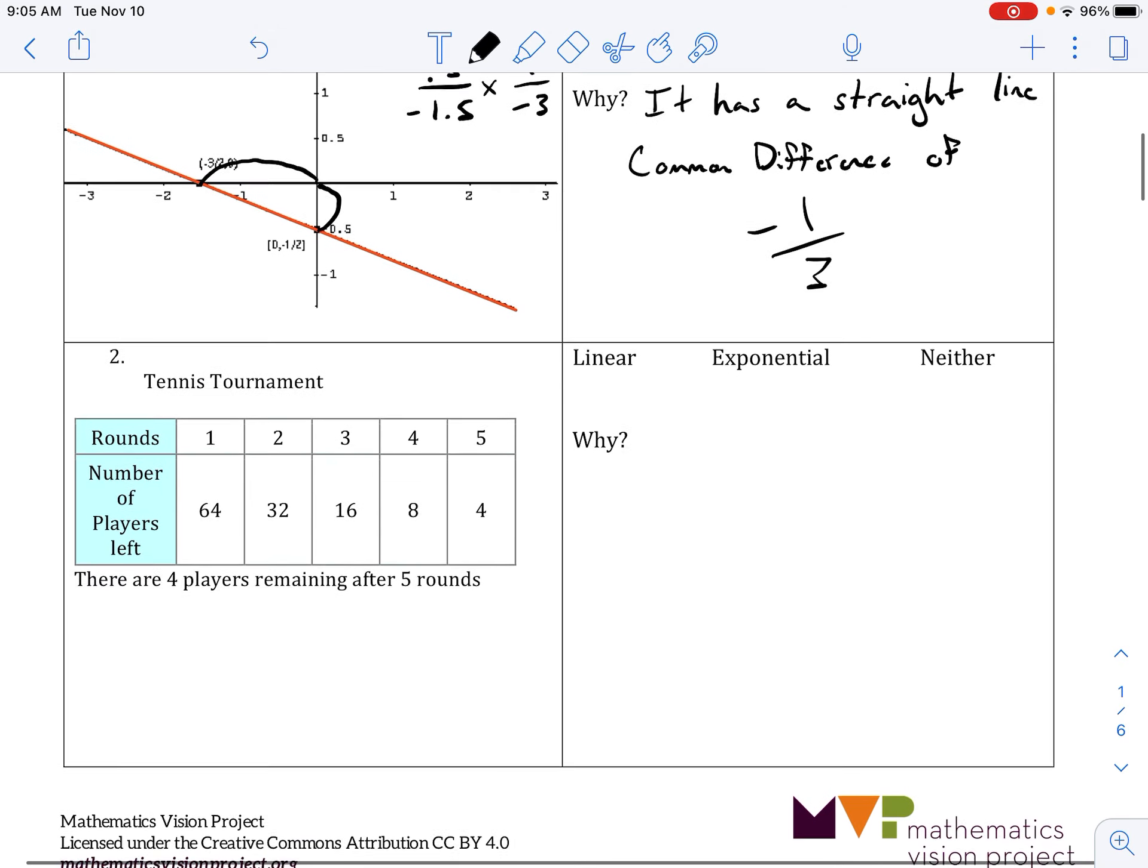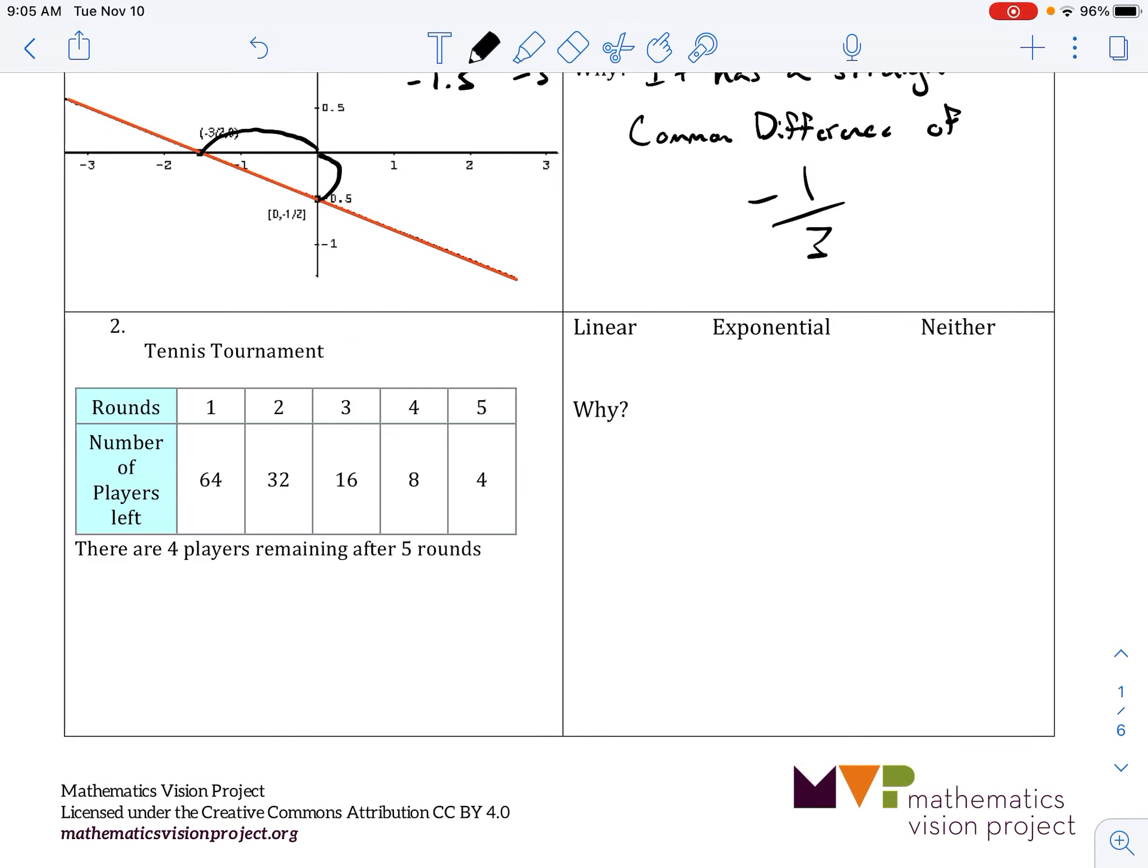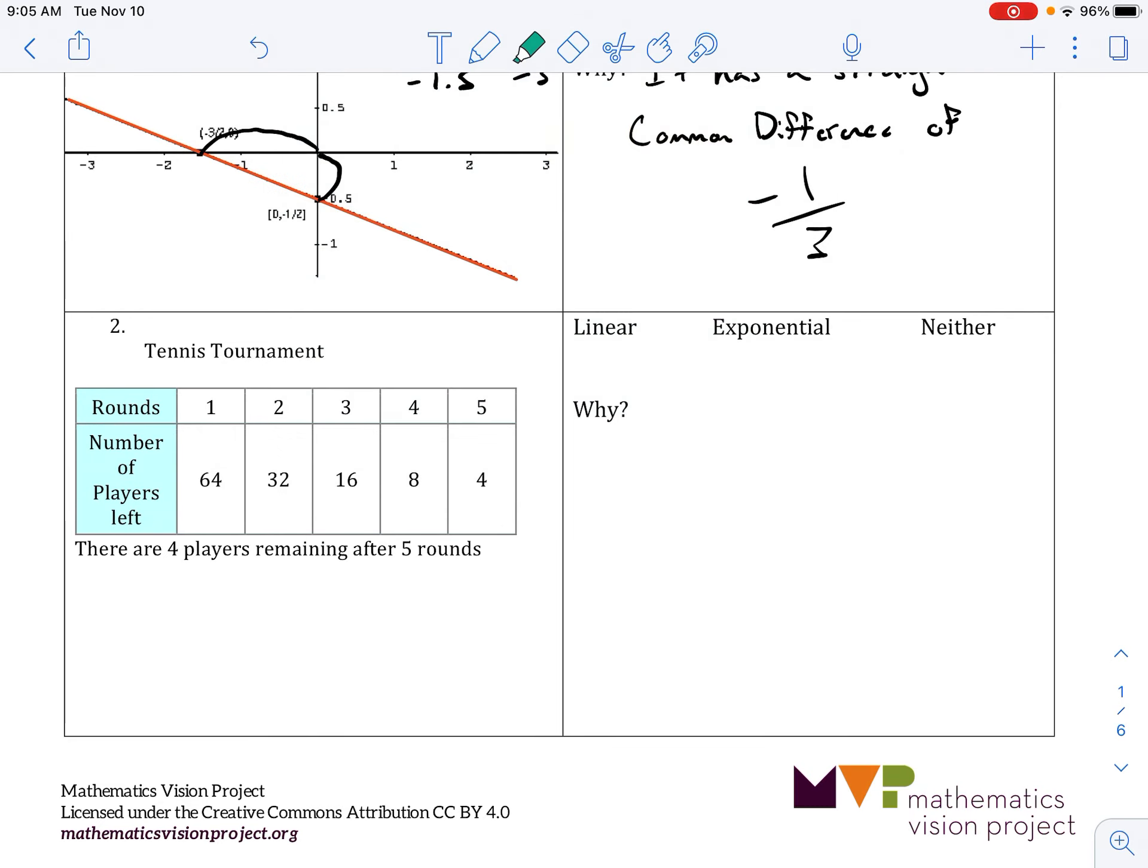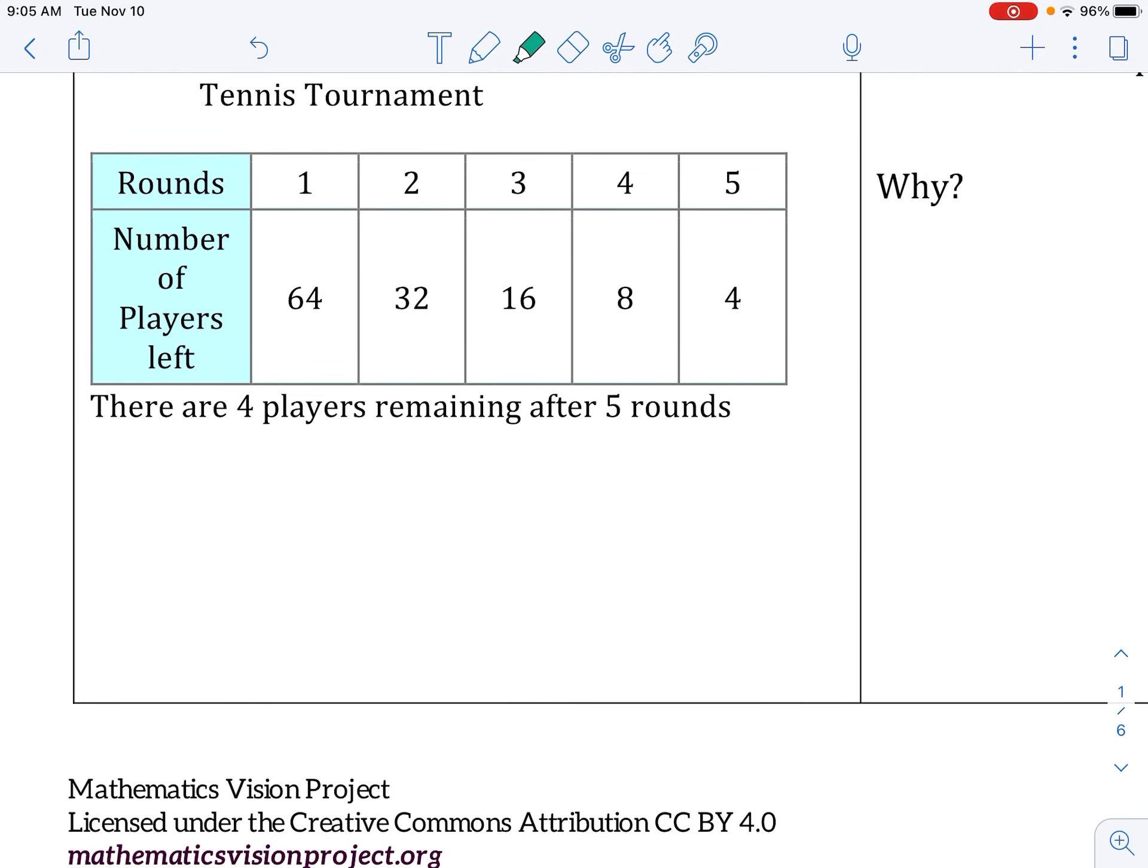Okay, the next problem is a table of values and it's going from 64 to 32 to 16 to 8 to 4. So if we looked at linear, that'd be minus 32 and then minus 16, so we know that this is not linear because those are not the same.